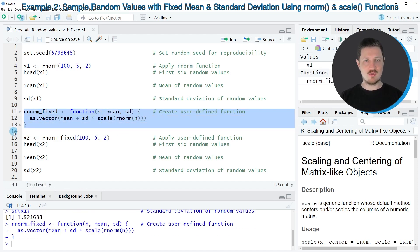So after running lines 11 to 13 of the code, you can see that this new function is appearing at the top right. And now we can apply this function using exactly the same input values as before when we applied the rnorm function.